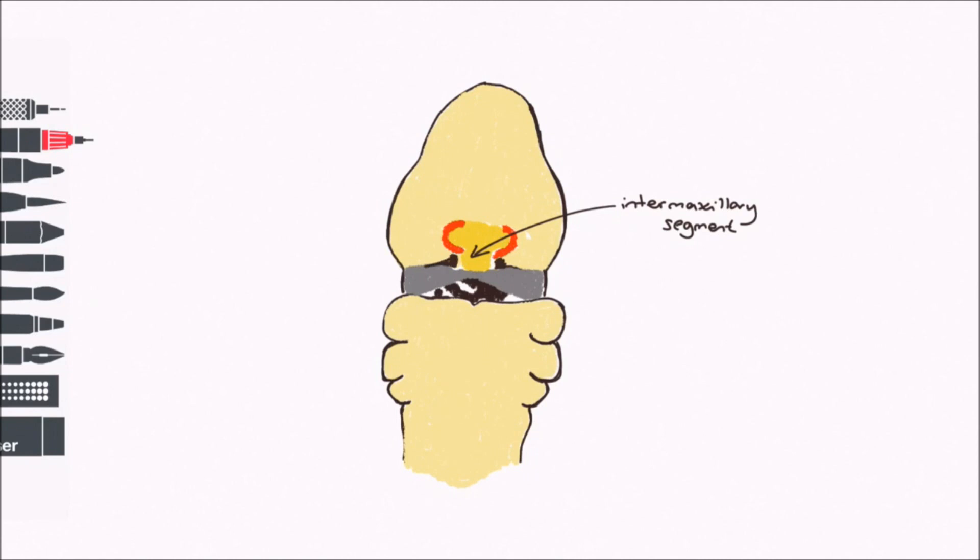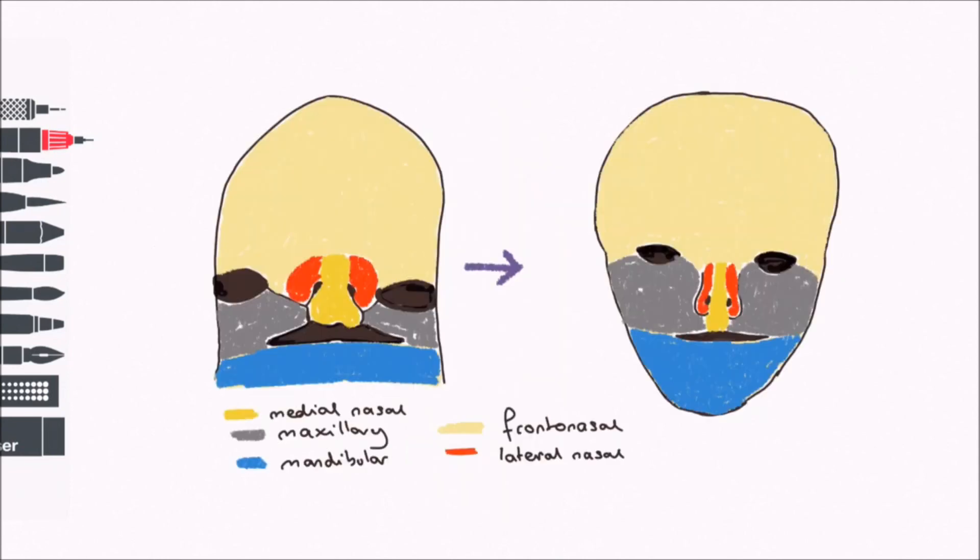The deep groove between the maxillary process and the superior lateral nasal prominence deepens and is renamed to the nasolacrimal groove. This forms a tube or canalizes to form the nasolacrimal duct. This connects the nasal passage to the medial corner of the eye. Remember that the eyes form on the lateral aspect of the head and then move forward and medially as the facial features become compressed.